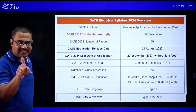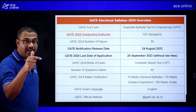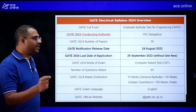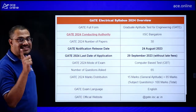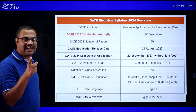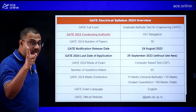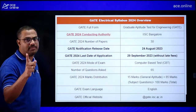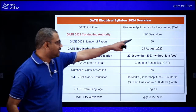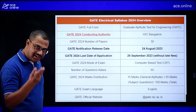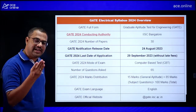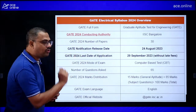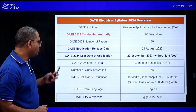For GATE 2024, the notification has already been released. This time IIT Bangalore — the number one science and technology institute in India — is conducting GATE. Expect a high-quality paper. There are a total of 30 papers; we are focusing on Electrical Engineering, ECE Communication, and Instrumentation. The notification was released on 24th August, so please note the important dates on the official website.